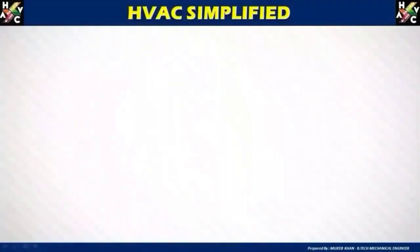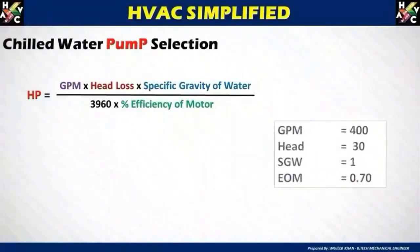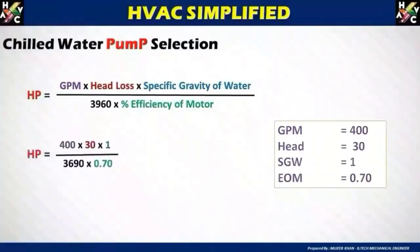Now let's calculate a chilled water pump selection example. The horsepower formula is: GPM × head loss × specific gravity of water, divided by 3960 × percentage efficiency of the motor. Assuming 400 GPM, a head of 30 feet, specific gravity of 1, and motor efficiency of 70 percent — the calculated horsepower is 4.64. So for these parameters, we need to select a pump with approximately 4.64 horsepower.